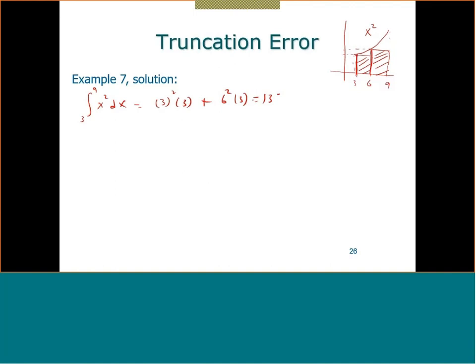On the other hand, finding the exact solution: x³/3 evaluated from 3 to 9 equals 234. You can see a huge difference between the two — so this is definitely a bad approximation for the integration.